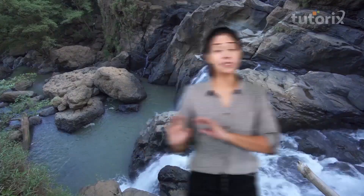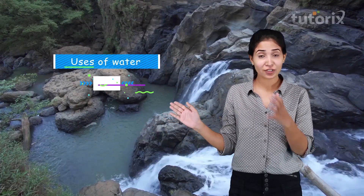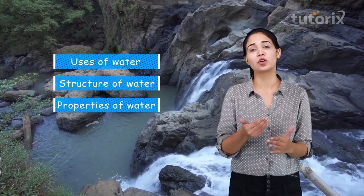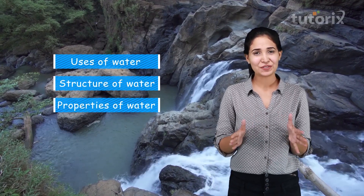About 70% of the Earth's surface is made up of water, and even if I talk about the human body, 65% of the human body constitutes water. We all know that water is essential for the survival of all forms of life. Today we will discuss the different uses of water, the structure of water, and the different properties of water. Let's start with the physical properties.